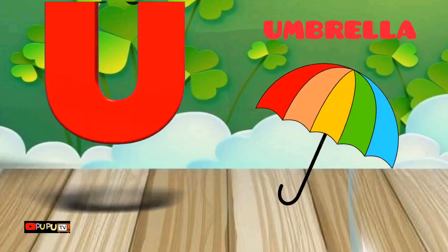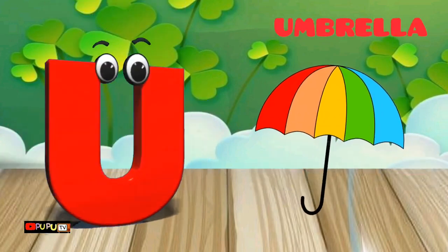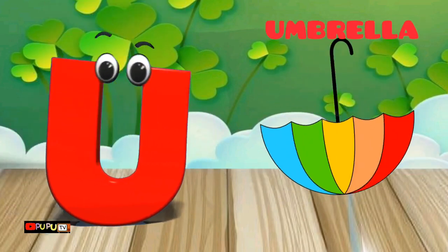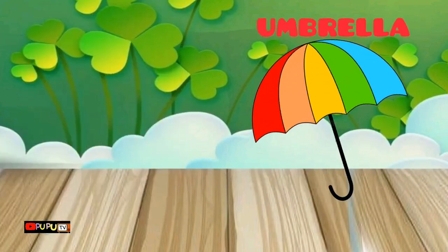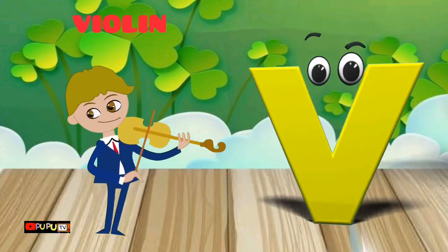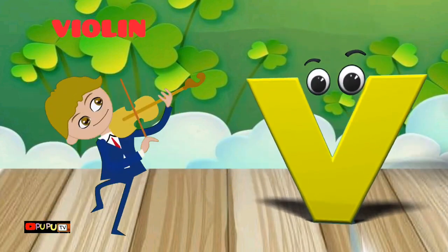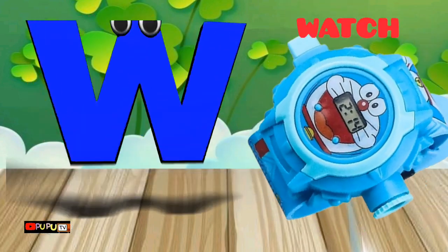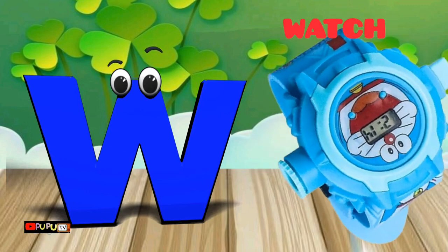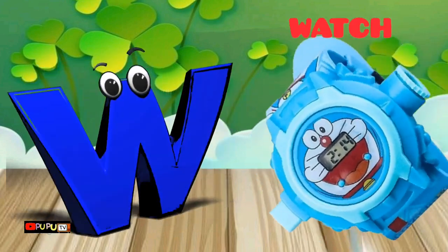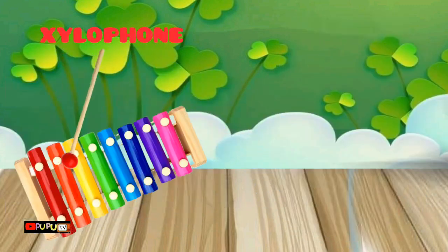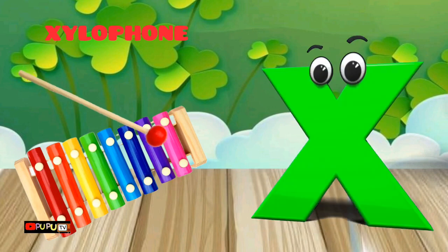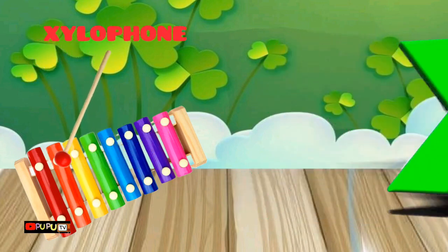U is for Umbrella. U-U-Umbrella. V is for Violin. V-V-Violin. W is for Watch. W-W-Watch. X is for Xylophone. X-X-Xylophone.